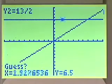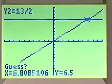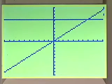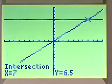Then we use our arrow keys to go as close to that intersection point as we can get. That's our guess, and we hit enter. And the calculator tells us that our answer is x equals 7, and we said that 7 was our answer.